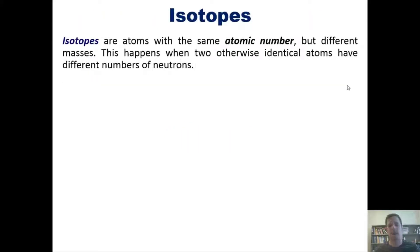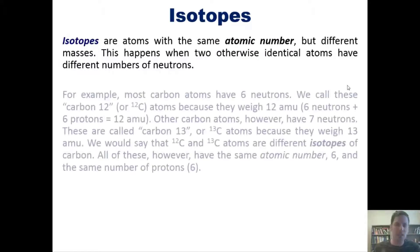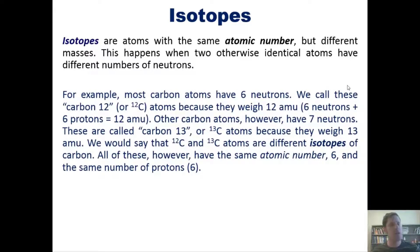Isotopes are different atoms with the same atomic number but different masses. This happens when two otherwise identical atoms have different numbers of neutrons in their nuclei. For example, most carbon atoms have 6 neutrons. We call these carbon-12 or C-12 atoms because they weigh 12 atomic mass units, since 6 neutrons plus 6 protons equals 12. Other carbon atoms have 7 neutrons. These are called carbon-13 or C-13 atoms. We would say that carbon-12 and carbon-13 atoms are different isotopes of carbon. All of these have the same atomic number 6 and the same number of protons, 6.